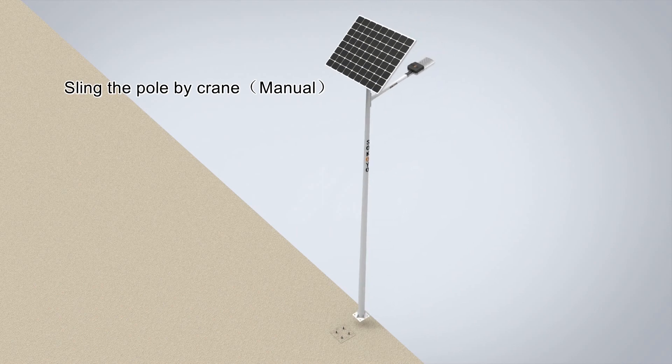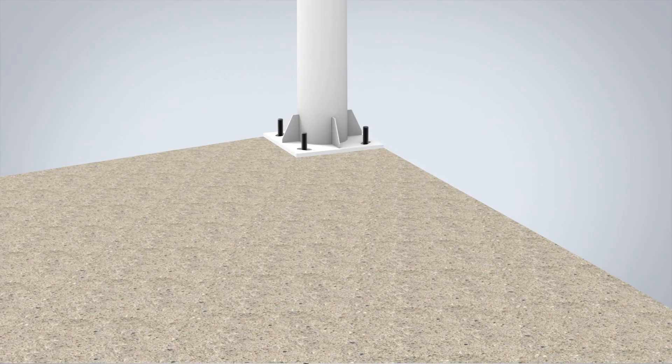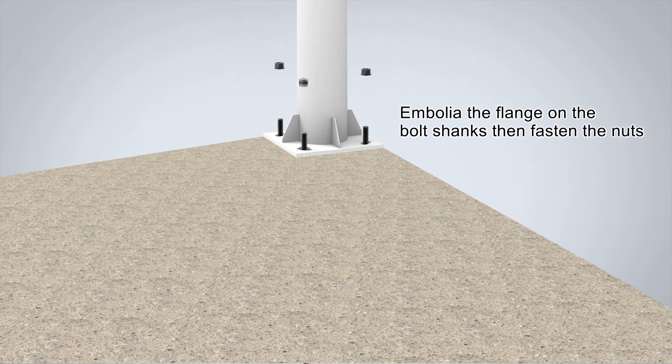Sling the pole by crane manually. Install the flange on the bolt shanks then fasten the nuts.